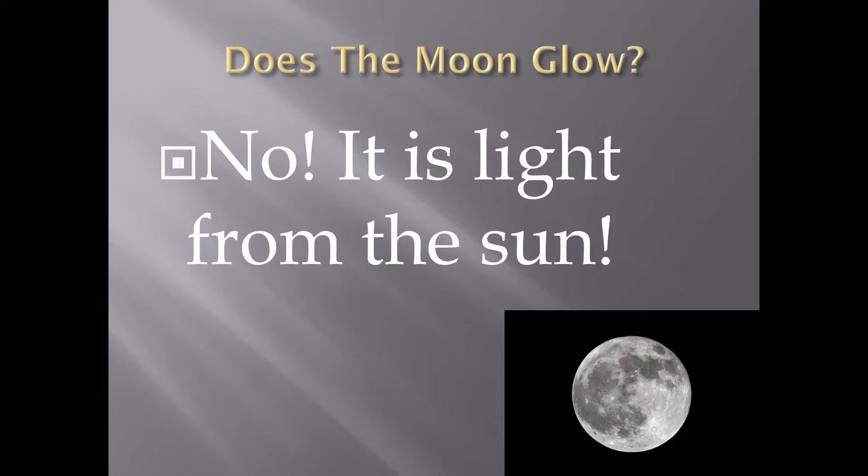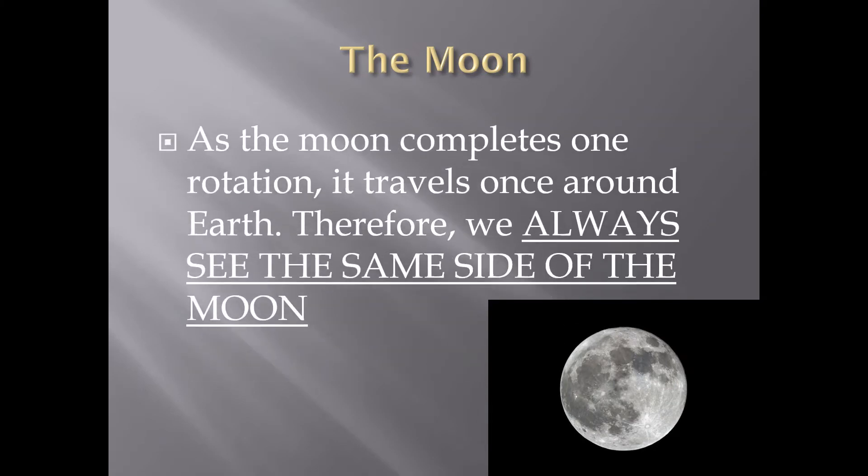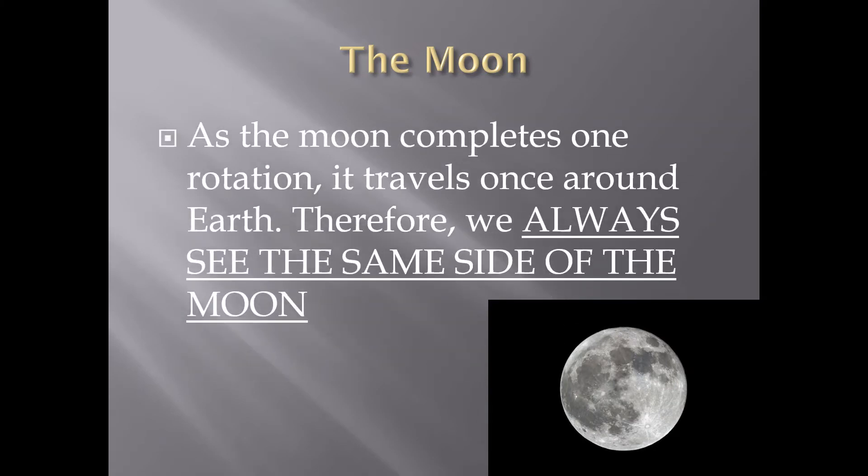It is light from the sun though, it is not shining. As the moon completes one rotation, it travels once around the Earth, therefore we always see the same side of the moon. I know it's a little complicated, but we are always seeing the same side of the moon because it is rotating as we are going around it. It's rotating the same speed around the Earth because the moon has a rotation and a revolution. Remember, the rotation is the moon spinning on its own axis and it's in time with us so we see the same side.